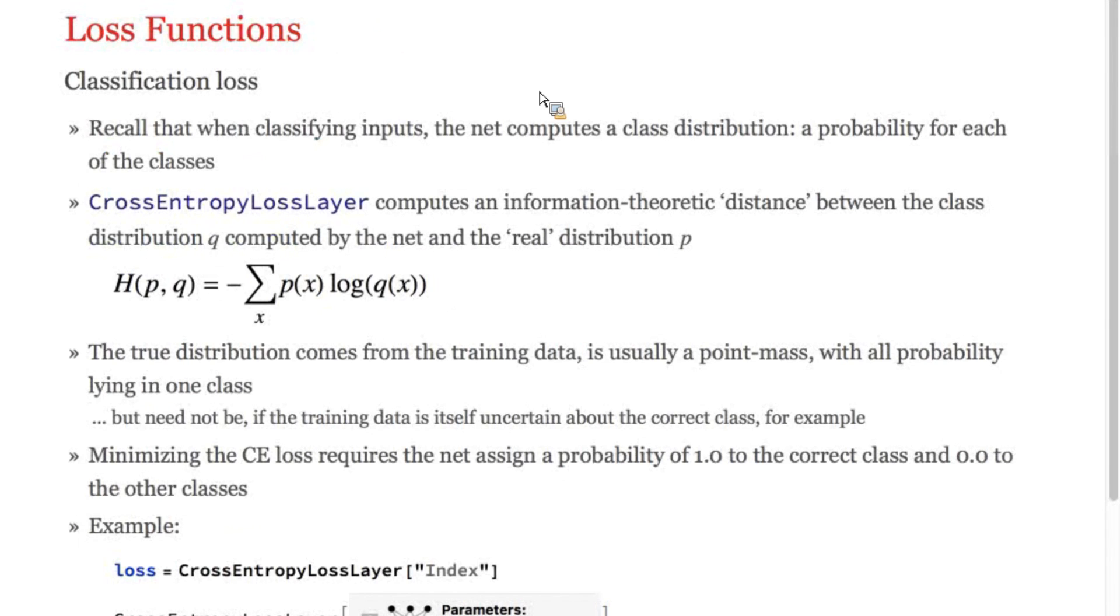For classification problems, the situation is slightly more complex. The net produces a distribution in the form of a probability vector. Here, the loss you'll want to use is known as cross-entropy loss. The technical definition involves the average amount of extra information you need to specify the true class, given the prediction of the network. But this basic example shows the idea.